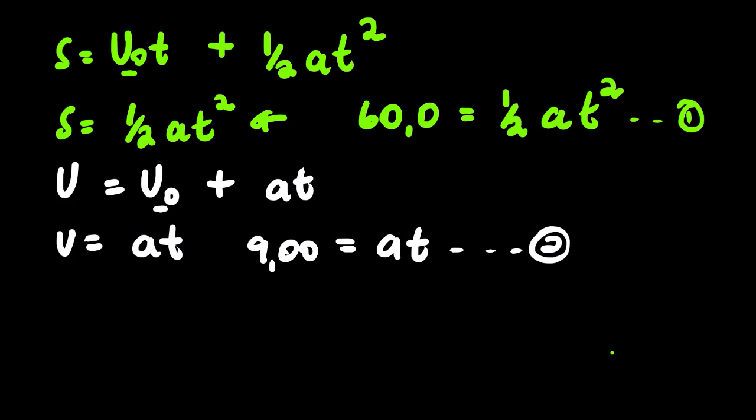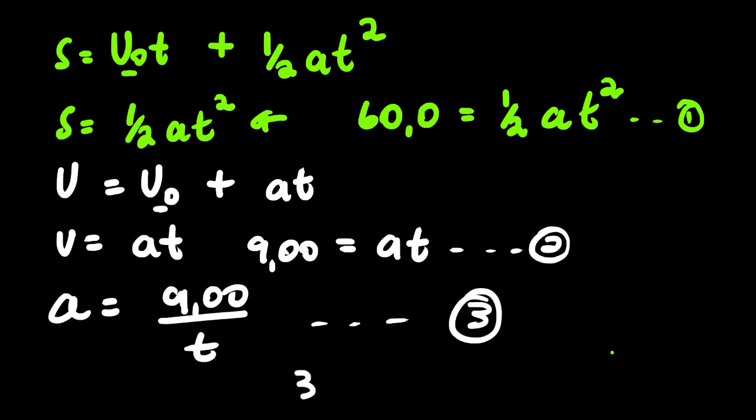From equation two we can rearrange the equation such that our acceleration is the subject of the formula, so we have a equals 9.00 divided by t. Then we can simply label this as equation three. Now we are going to substitute equation three into equation one. We have 60.0 equals half, acceleration we substitute by 9.0 over t, and then we have the t squared.